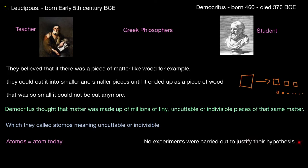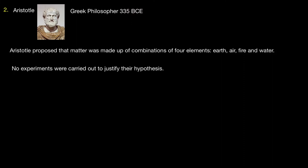Aristotle, Greek philosopher, 335 BCE. Aristotle proposed that matter was made up of combinations of four elements: earth, air, fire, and water. No experiments were carried out to justify their hypothesis. They did disagree with Democritus in that they did not believe in atomos.